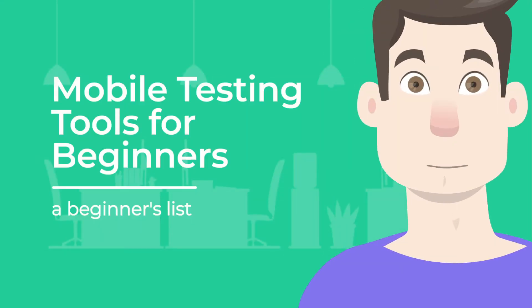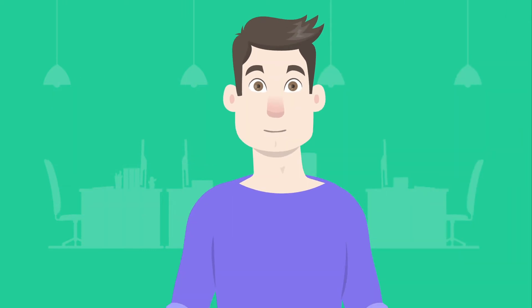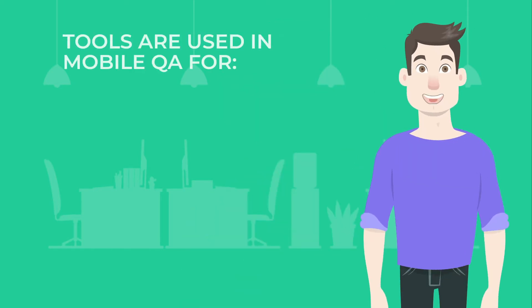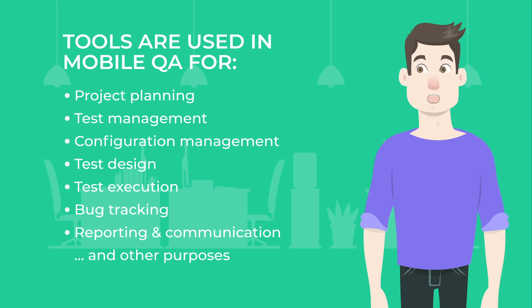QA Madness: Mobile Testing Tools for Beginners. Mobile testing tools are very diverse and QA engineers use them not only for automation. Today I will tell you briefly about the types of tools applied in mobile testing and some solutions our team uses and highly recommends. There are a variety of tools that serve different purposes: project management and planning, test design and execution, communication and reporting, virtual devices, and bug trackers. Let's start with the basics — the essentials for mobile QA.